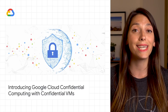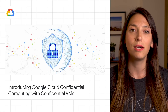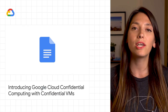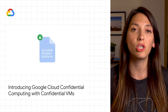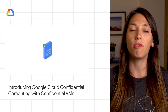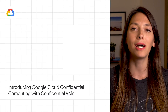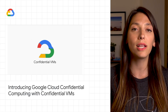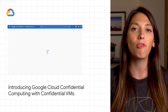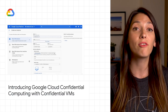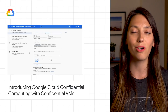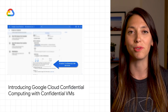Google Cloud encrypts data at rest and in transit, but customer data must be decrypted for processing. Confidential computing is a breakthrough technology which encrypts data in use while it's being processed. Confidential VMs, now in beta, is the first product in Google Cloud's confidential computing portfolio. Confidential VMs offer memory encryption so that you can further isolate your workloads in the cloud. For more details on Confidential VMs, head on over to the post.